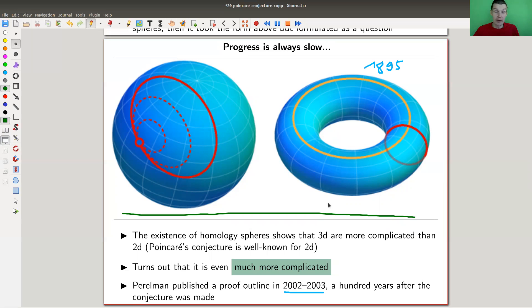The existence of homology spheres made this way more complicated. It turned out to be not just a little bit more complicated than the two-dimensional case, but much, much, much more complicated.